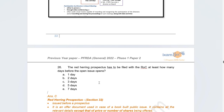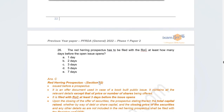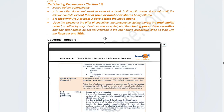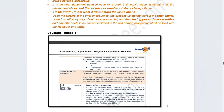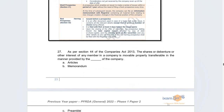The next question: a red herring prospectus should be filed with the ROC how many days before the issue opens? The correct answer is at least 3 days. Under Section 32, the red herring prospectus must be filed with the ROC at least three days before the issue opens. Covered in notes, PDFs, videos, and practice tests.